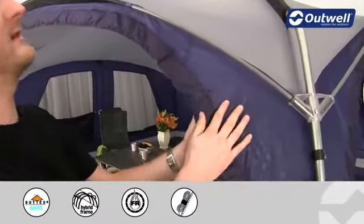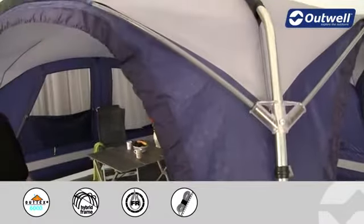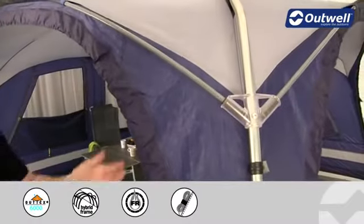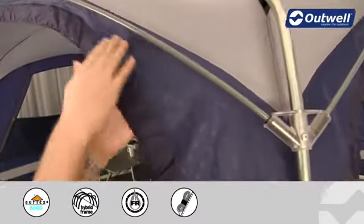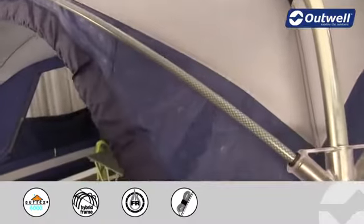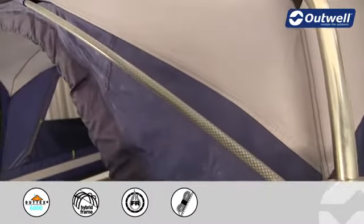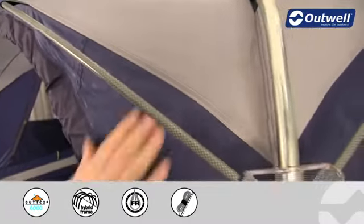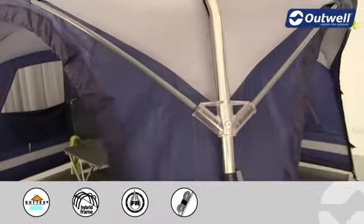What we're using on here is our Outex 6000 for the flysheet. This is a polyester material which has been PU coated on the back and then it's also got fully taped seams all the way across giving it a hydrostatic head of 6000 millimeters and that's going to ensure that it's completely waterproof.